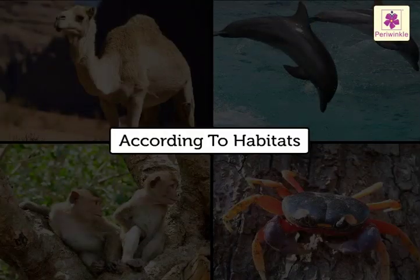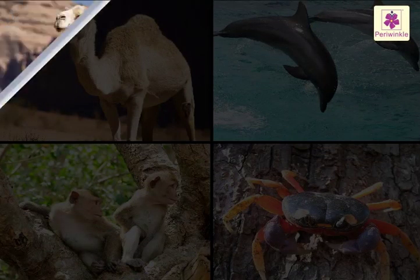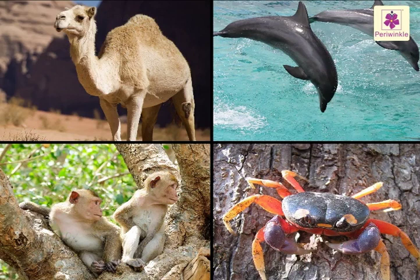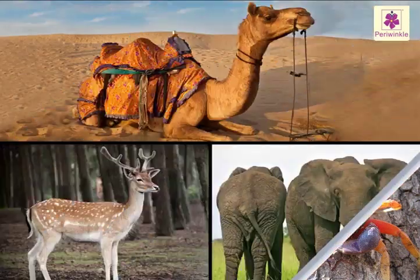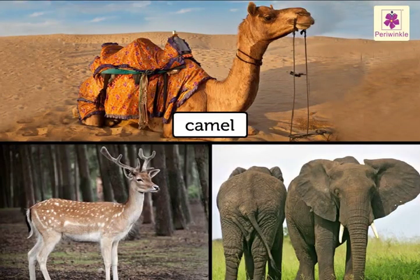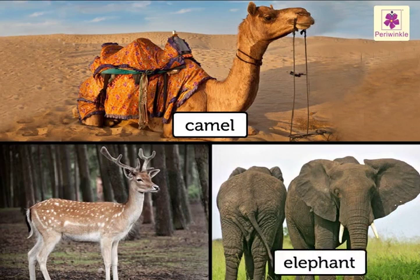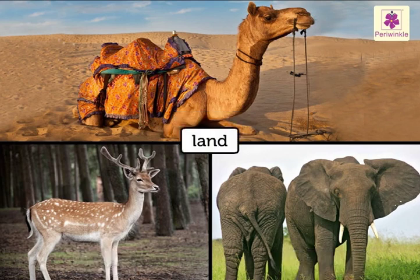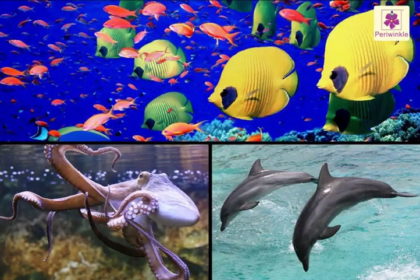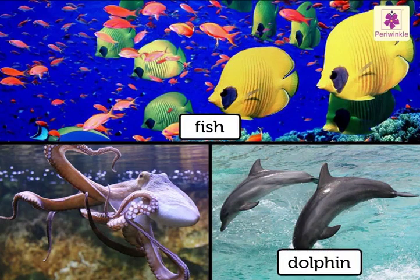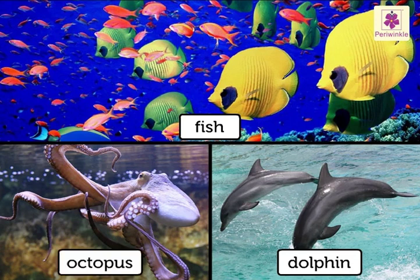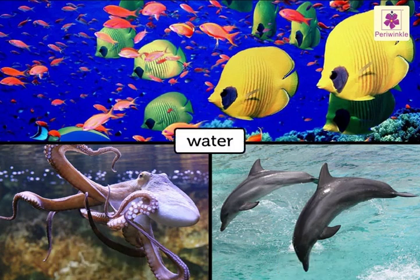Animals have different habitats. Animals like camel, elephant, and deer live on land. Animals like fish, dolphin, and octopus live in water.